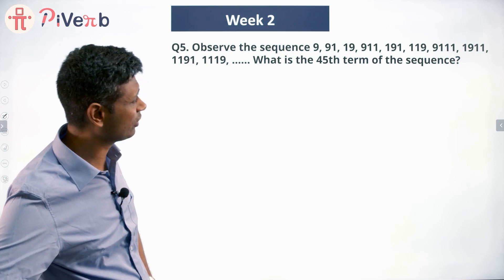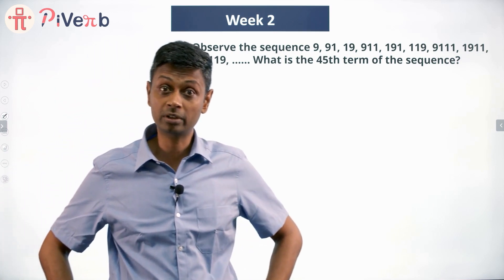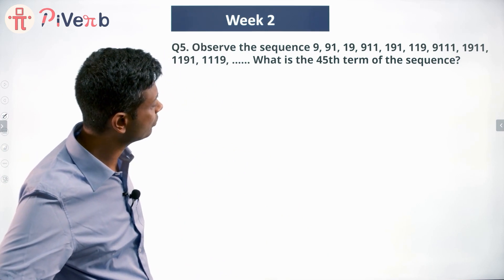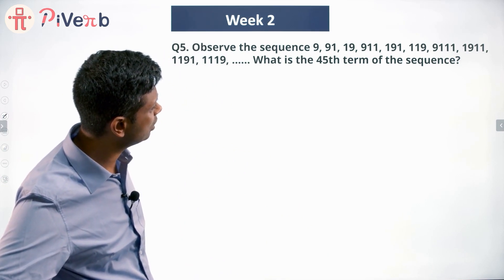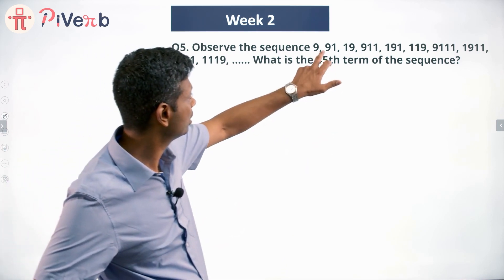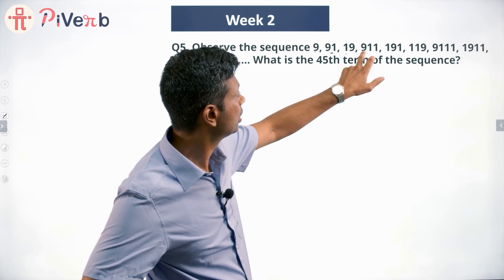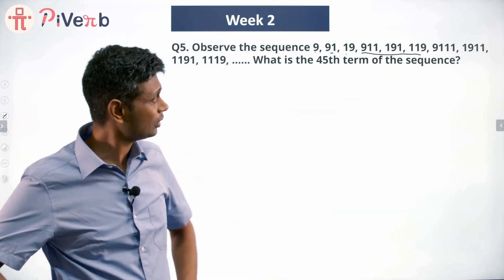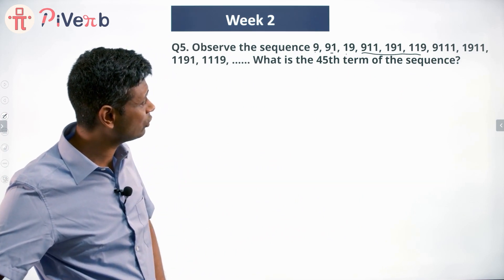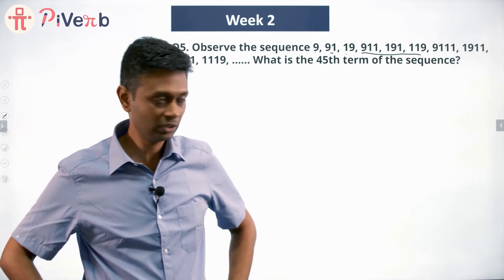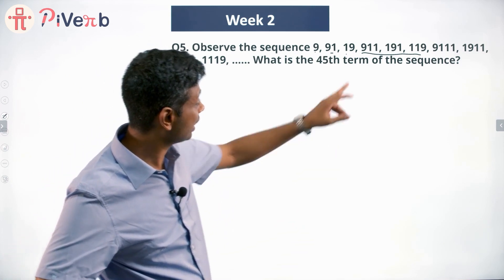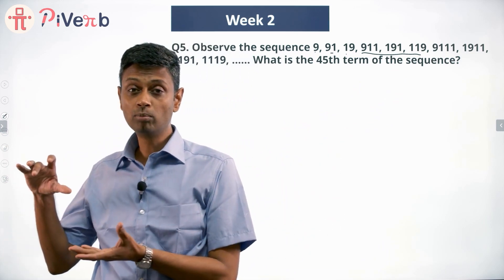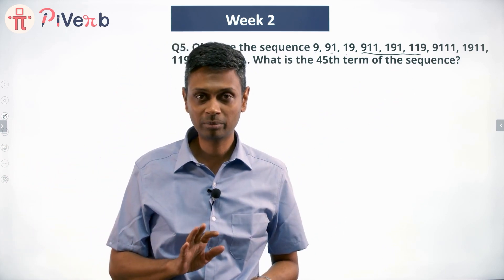It took me a while to understand what the pattern was. The first number is 9, then 91, 19, so that's one-digit and two-digit numbers. Then three-digit numbers, four-digit numbers, and so on. All of these numbers have only 9 and 1 in them. In three-digit numbers, 9 moves from one digit position to another — quite brilliantly.